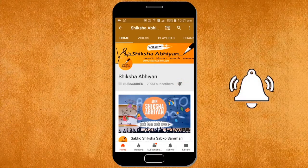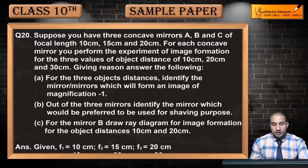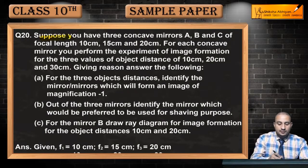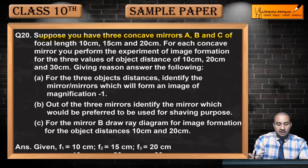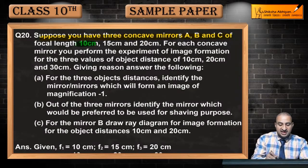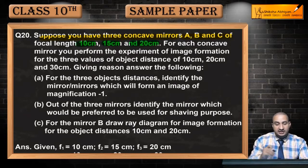Now see question 20. The question is: suppose you have three concave mirrors A, B and C of focal length 10 centimeter, 15 centimeter and 20 centimeter.